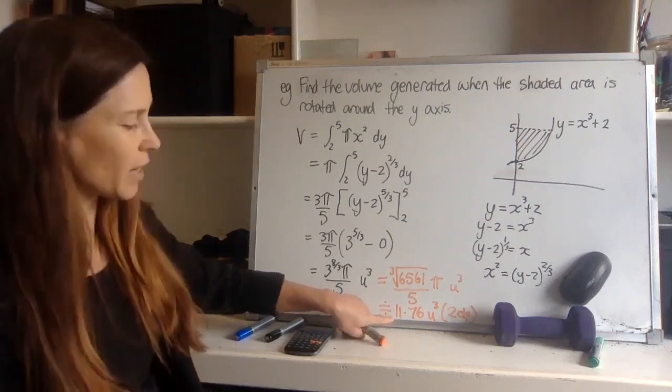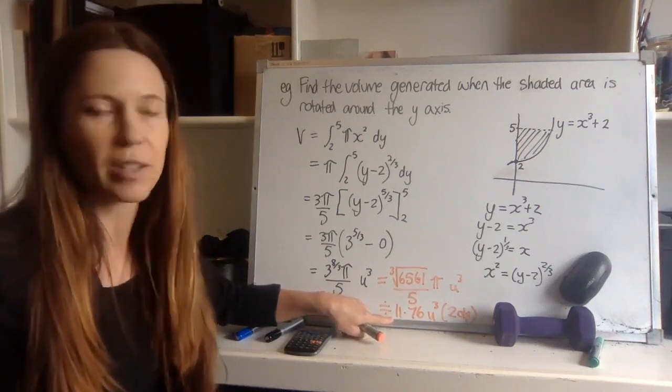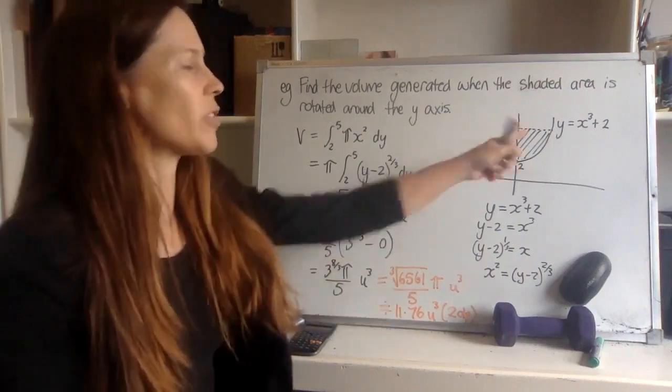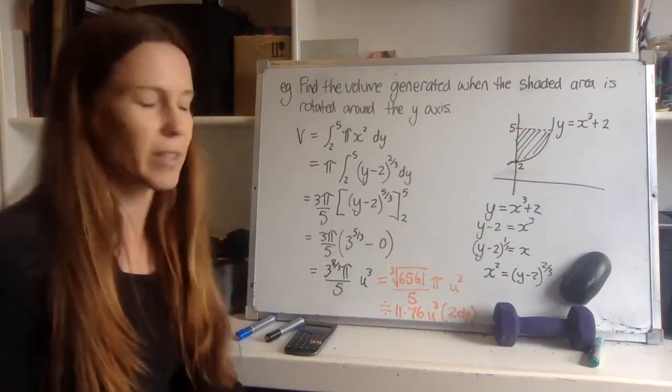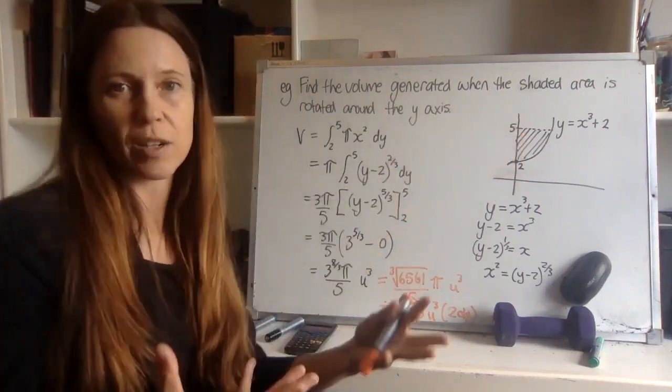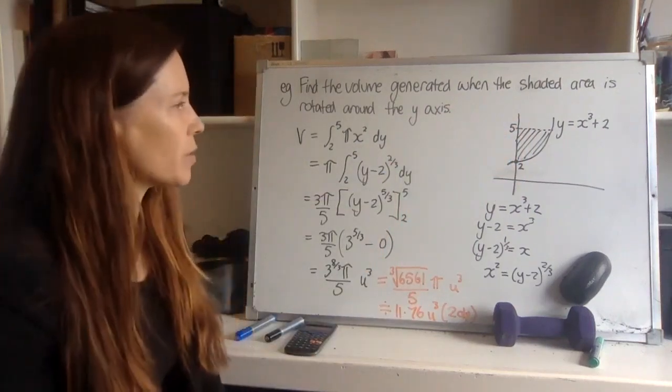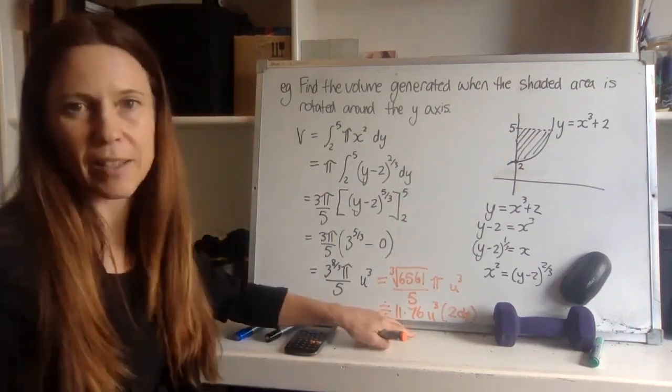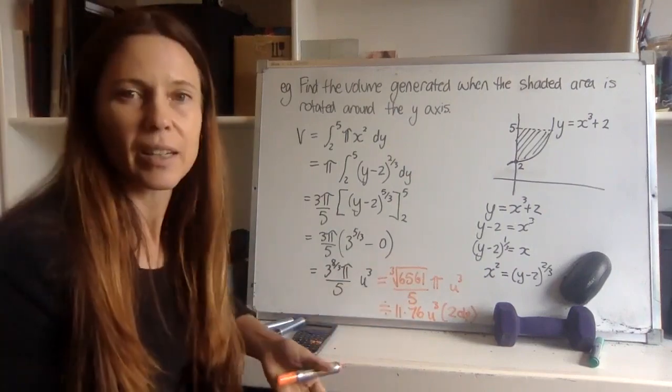And always check. I think it's not a bad idea to find the approximation anyway, just so you can check that it's a number that sort of makes sense. If I've got numbers here like two and five, then I can sort of picture roughly how many cubic units there might be. And if I come up with some answer like 500 cubic units, then clearly I'm going to be able to see.